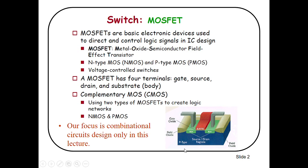This is the simplest structure of an NMOS transistor. Here you can see the gate terminal, source terminal, drain terminal, and a P-type substrate with the body terminals. This is the channel region, and this is the channel length. The gate is connected to this channel region via an insulator called SiO2 or silicon oxide. We apply the voltage at the gate terminal to control the current between drain and source terminals.